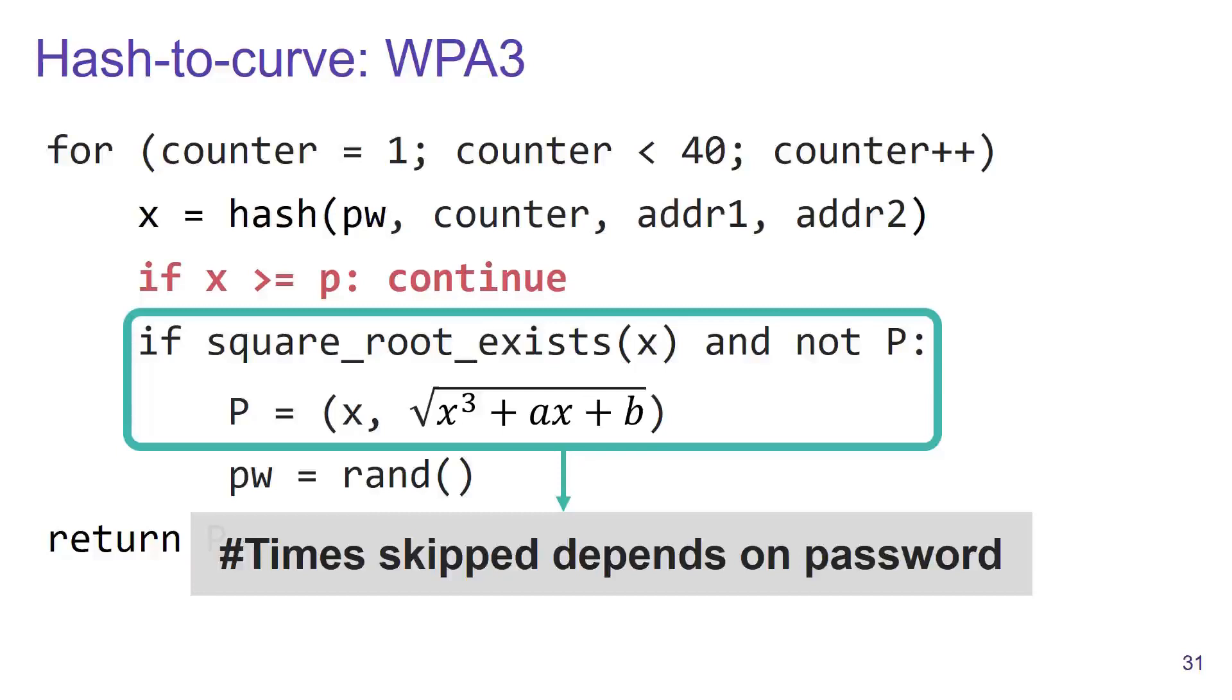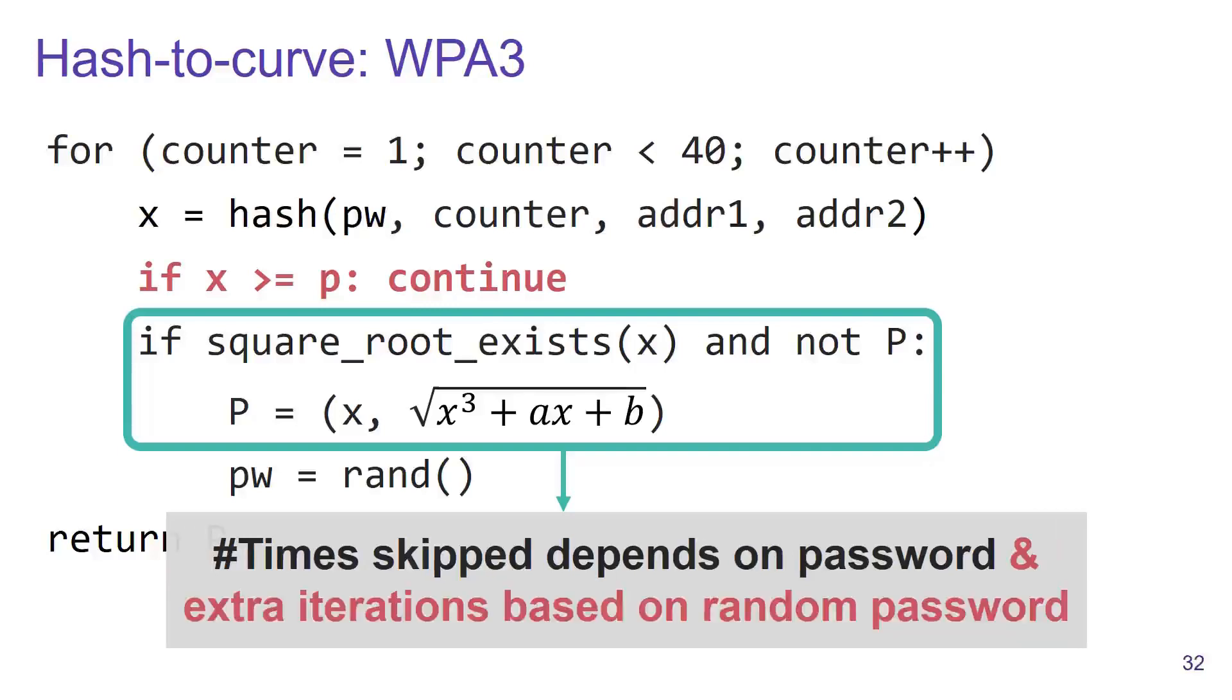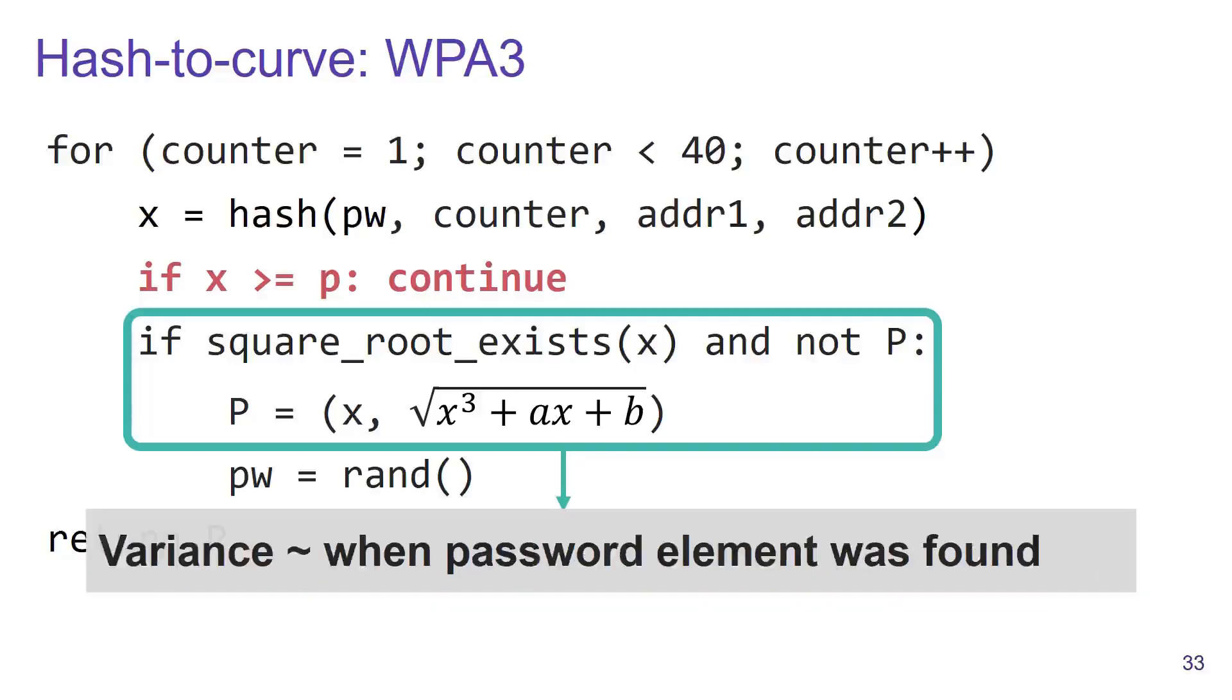This case is not as trivial to abuse as the EAP-PWD case because the number of times this code is skipped depends on the real password but also on the random password that is executed in these extra iterations. Nevertheless, we were able to extract enough information to perform an offline dictionary attack.